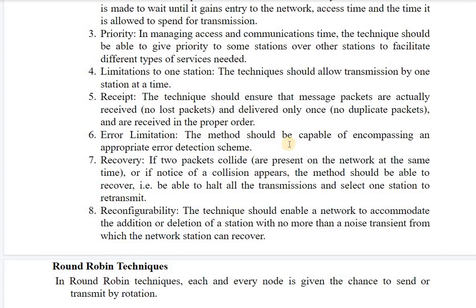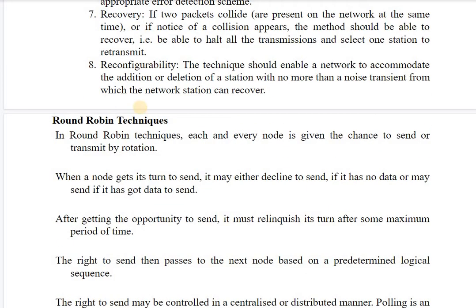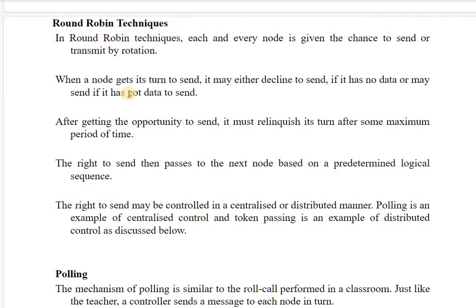Error limitation: the method should encompass an appropriate error detection scheme. Recovery: if two packets collide, the method should be able to recover, halt all transmissions, and select one station to retransmit the data again. Reconfigurability: the technique should enable a network to accommodate the addition or deletion of stations smoothly, with no more than a noise transient from which the network can recover.